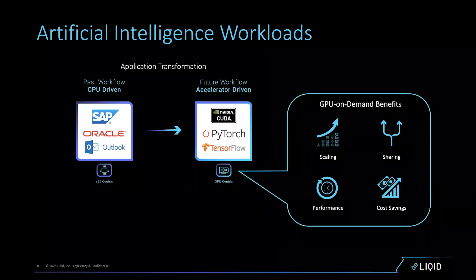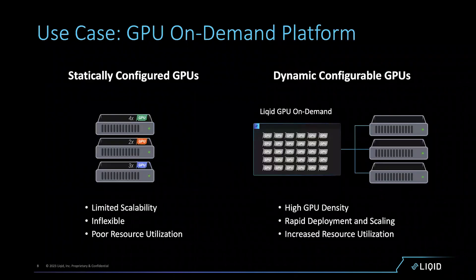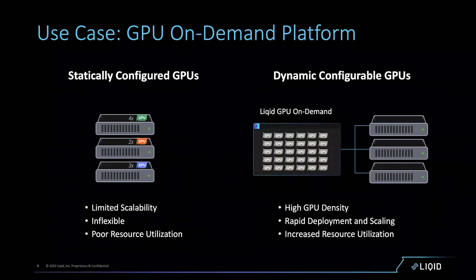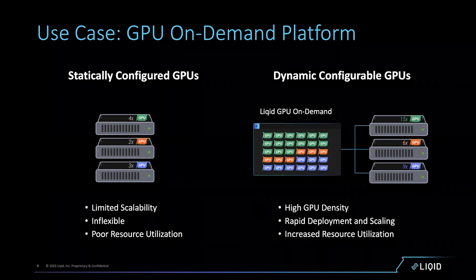We have the right platform for deploying these accelerators — scaling, sharing, and performing. If we weren't changing the economics, we wouldn't be successful. Our number one use case is around what we call GPU on demand. The old way — plugging GPUs directly into servers — limits scalability, flexibility, and utilization. In our world, we take a pooling approach that achieves higher density per compute node or rack, enables rapid deployment and scaling, and fundamentally changes device utilization to change the economics.